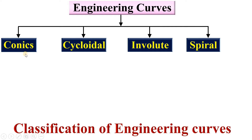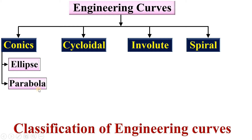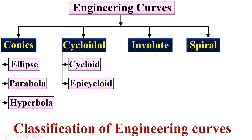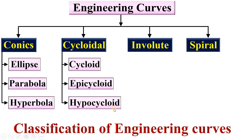In the conics group there are three types of engineering curves: ellipse, parabola, and hyperbola. In the cycloidal group there are three types of engineering curves: cycloid, epicycloid, and hypocycloid.